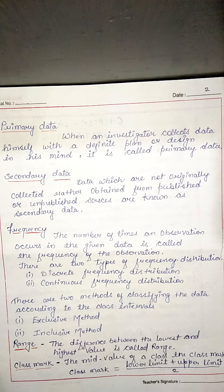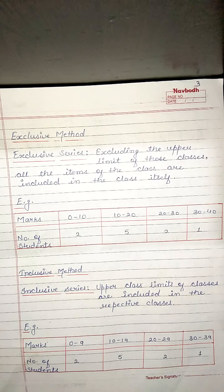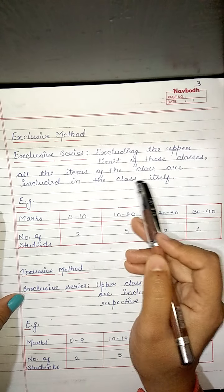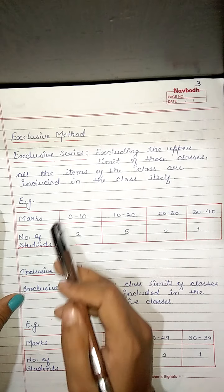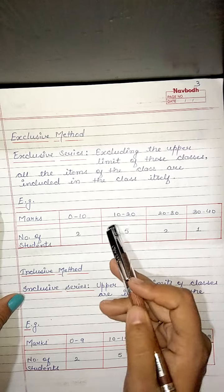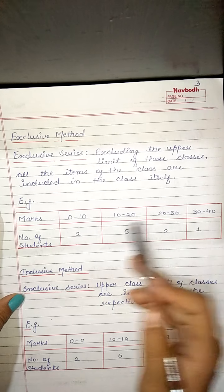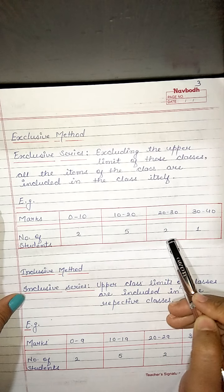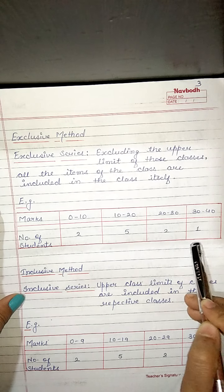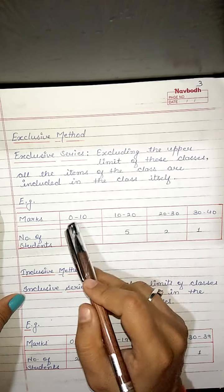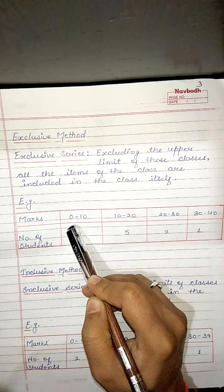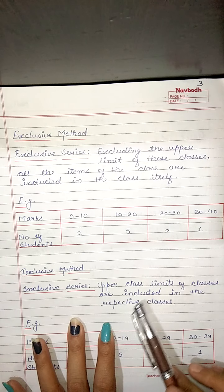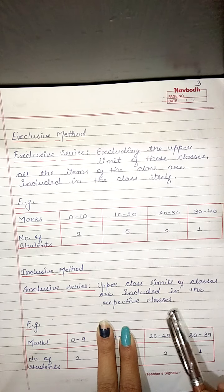What are the inclusive method and exclusive method? The inclusive method includes the upper limit of the classes — all the items of the class are included in the class itself. For example, if we have a table with marks: 0 to 10, 10 to 20, 20 to 30, and 30 to 40, we count marks in each interval. Including the upper limit — this is called the inclusive series, where the upper class limit of classes is included in the respective classes.